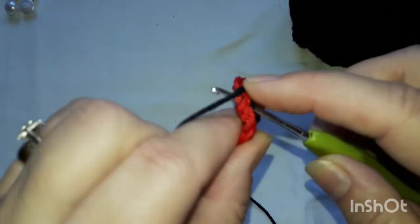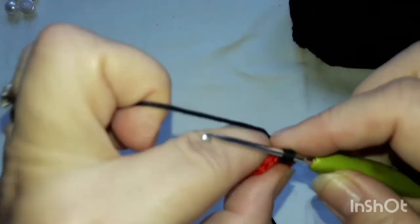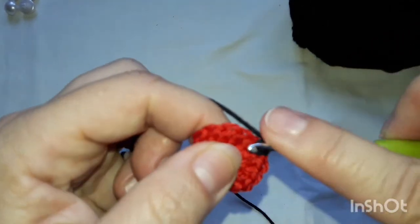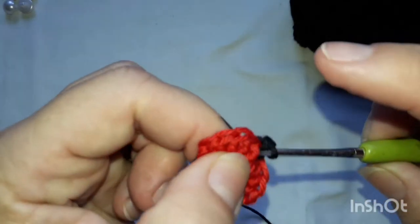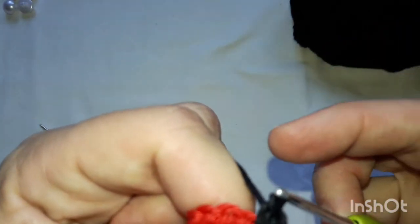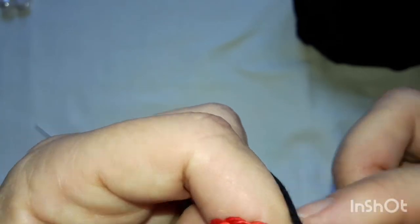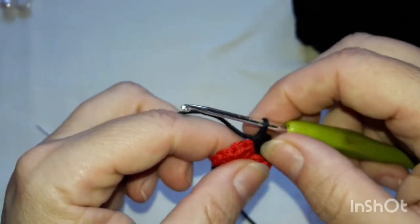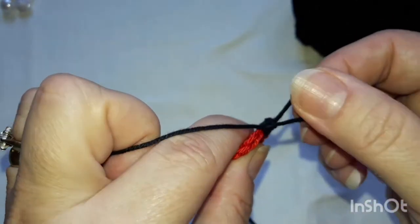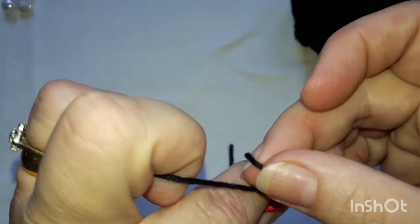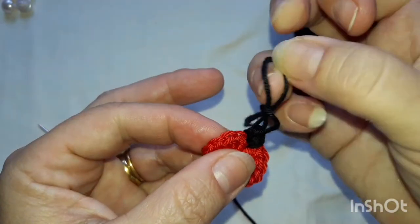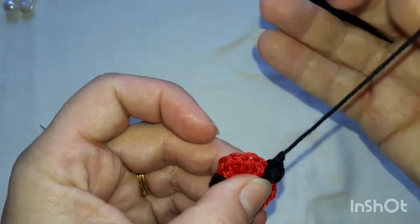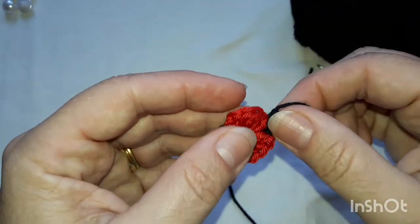And in there we're going to put three single crochets. One, two, three. Okay. And then you need to pull up the loop and then just thread that back in through that loop, that tail.